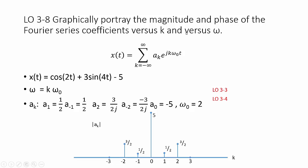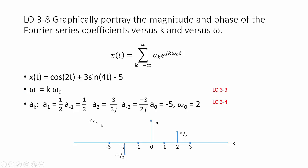Now let's go back to magnitude. Part of this learning objective is to plot versus omega rather than k. We accomplish this by remembering that omega equals k times omega naught, and omega naught equals 2. So we multiply each k value by 2 to convert our horizontal axis from k to omega. All of the magnitudes stay the same — only the axis changes. Similarly, for the phase versus omega plot, the phase values remain the same, but each k value is scaled by omega naught equals 2 to produce the omega axis.